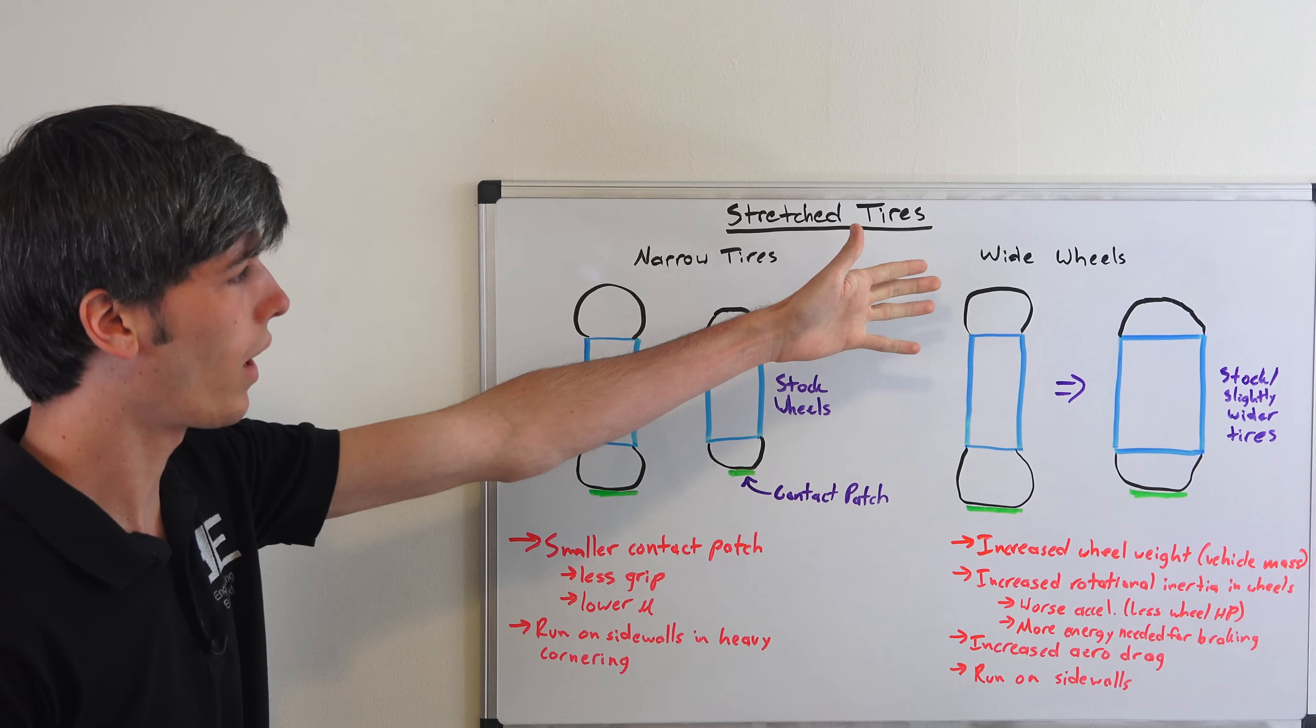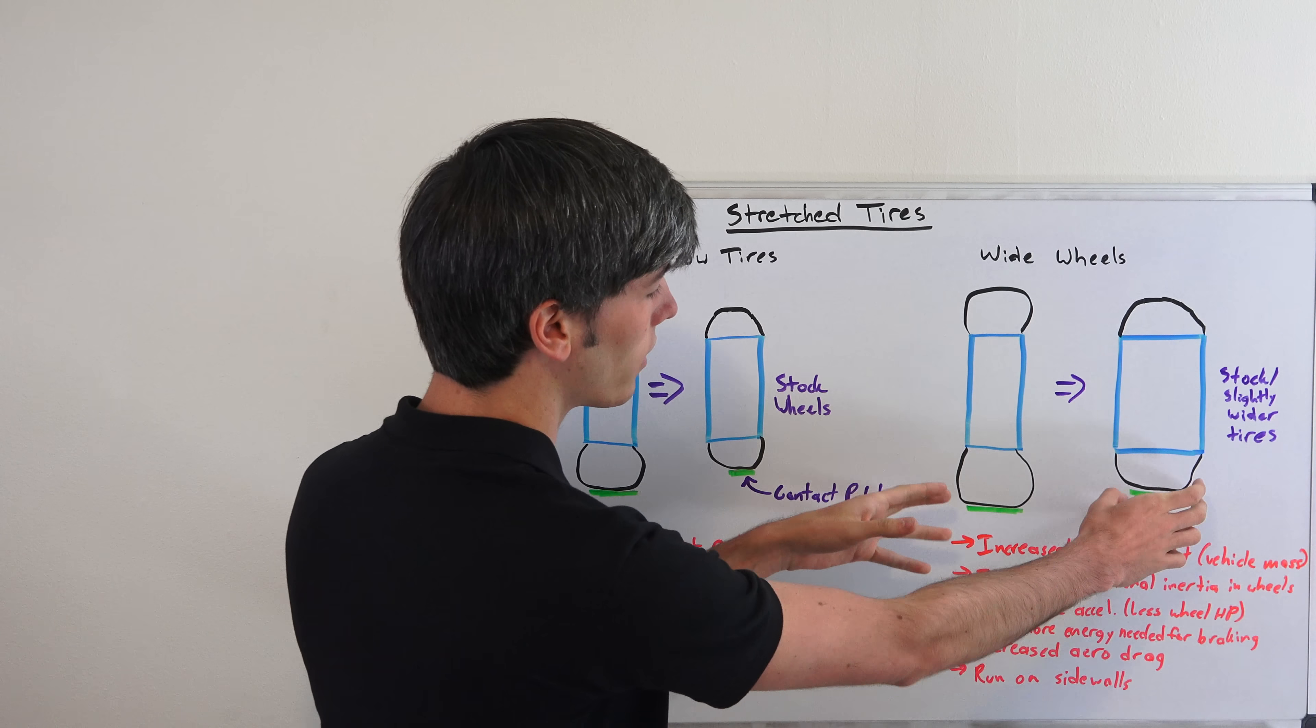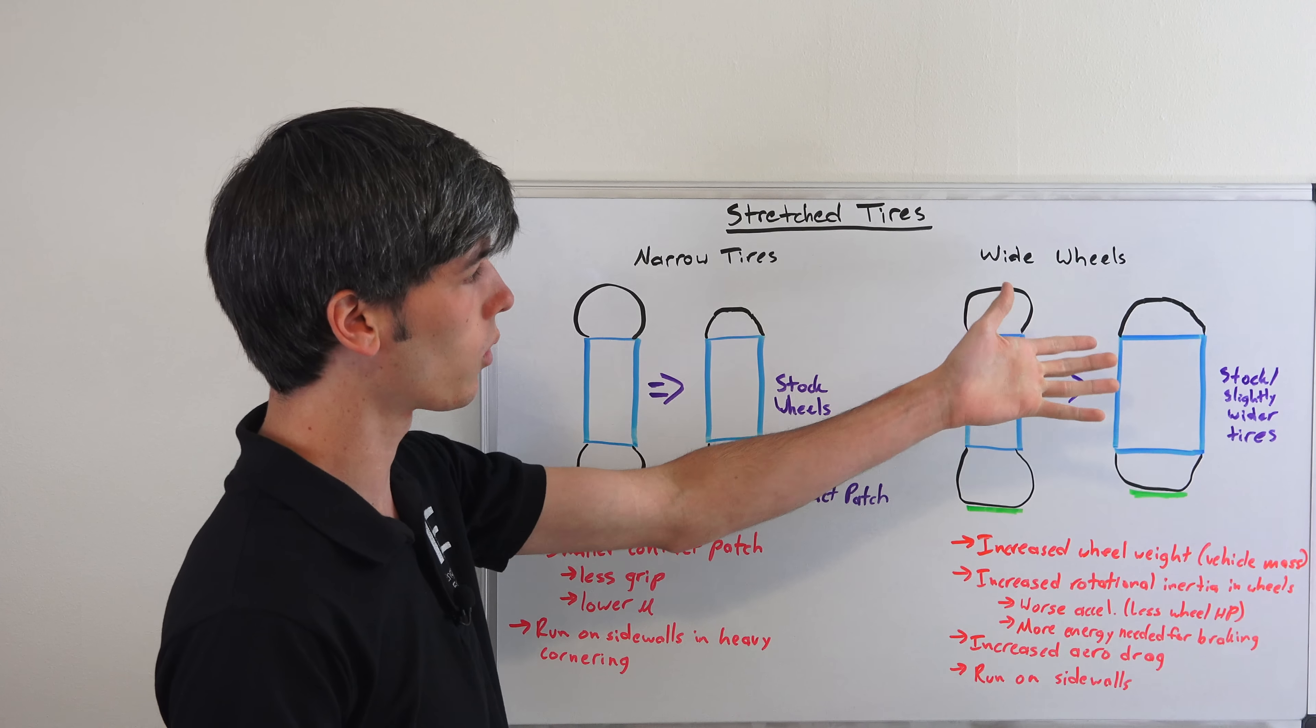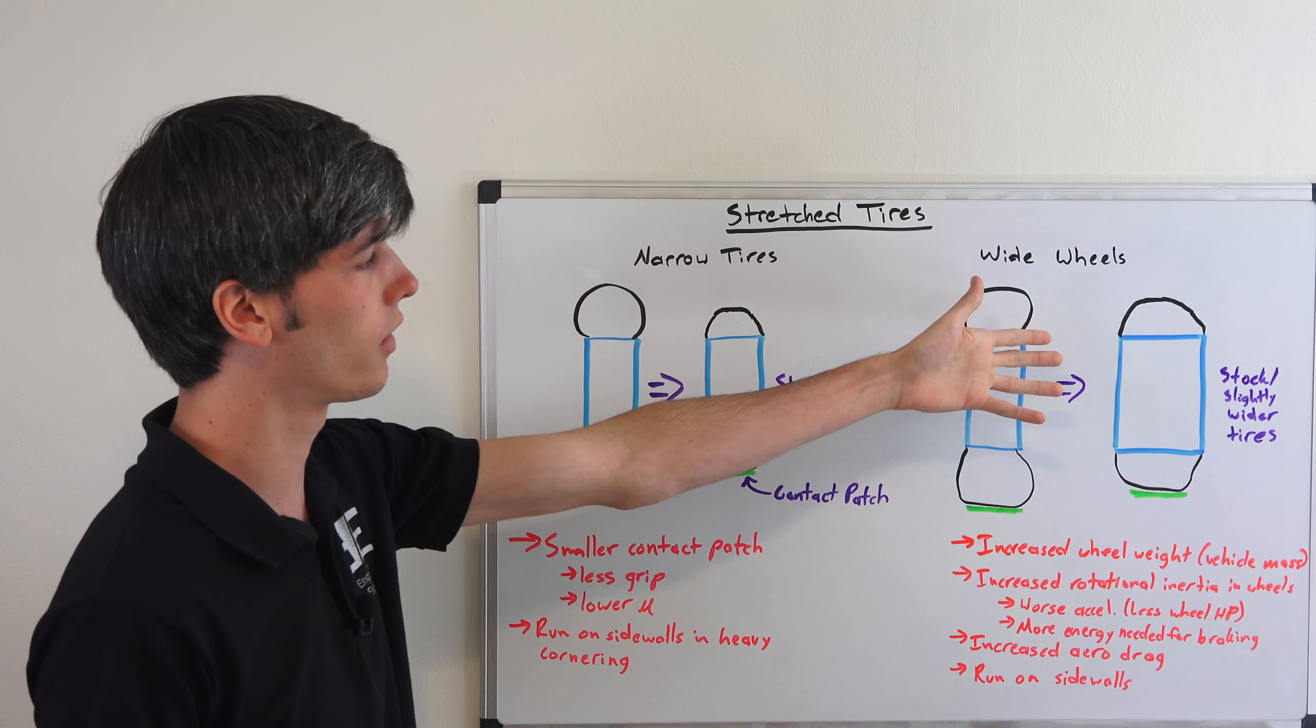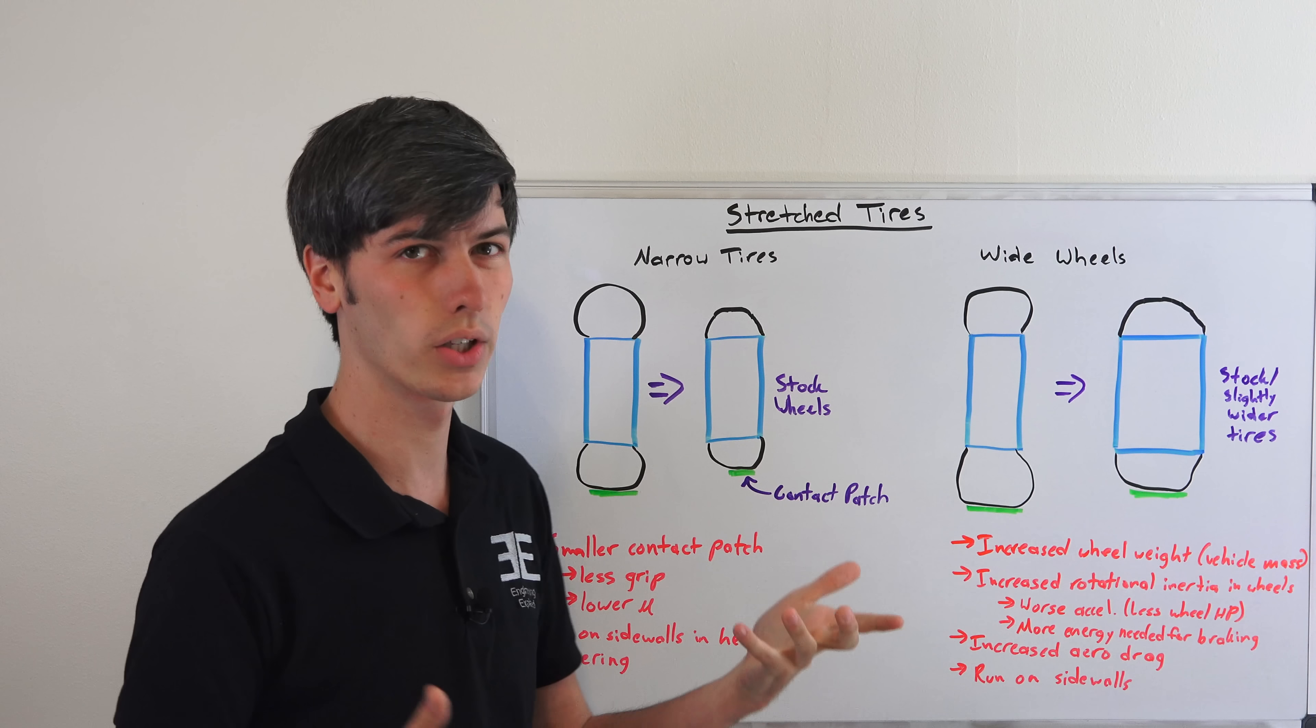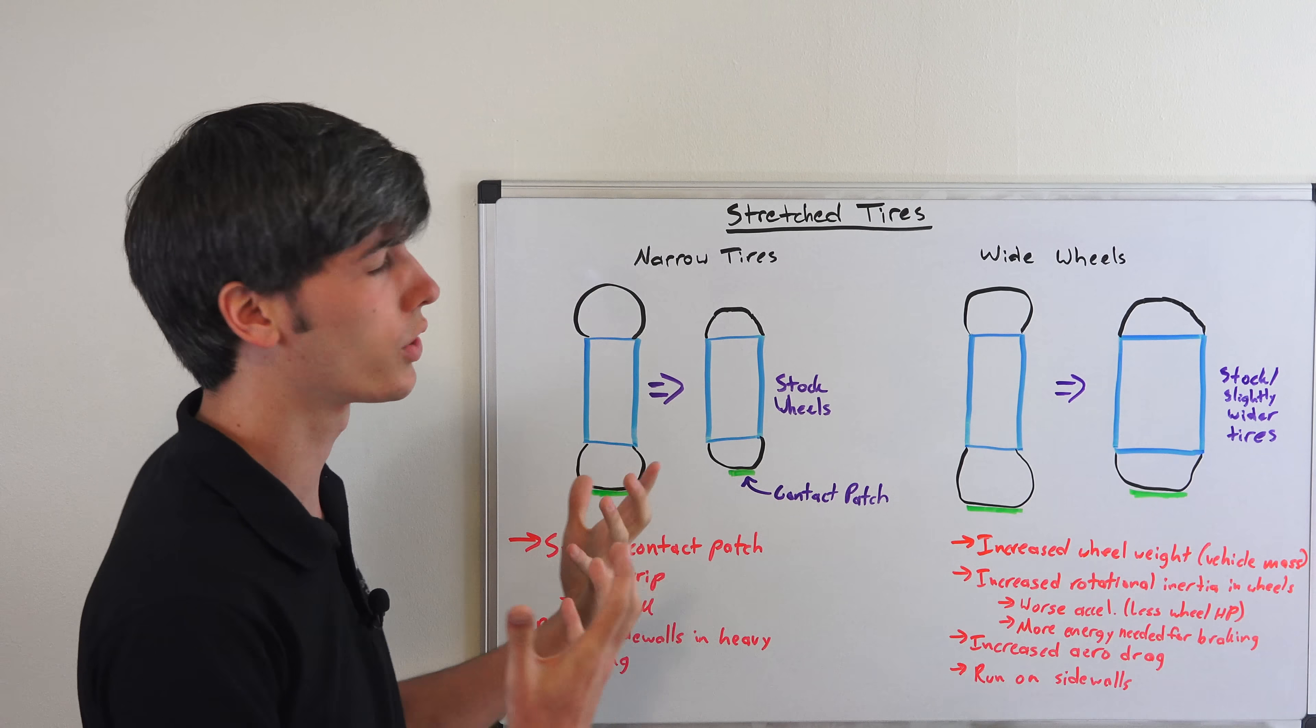So using wide wheels with stock tires or slightly wider tires where you're stretching it out, you may be able to get the same contact patch, it's possible. But there's a lot of drawbacks to doing this as well. You're going to be increasing the wheels weight, so you're increasing the weight of your vehicle. But additionally, because this wheel rotates, it has rotational inertia. And so you're increasing that rotational inertia, so your acceleration is going to be worse. Essentially you're lowering your at-wheel horsepower.